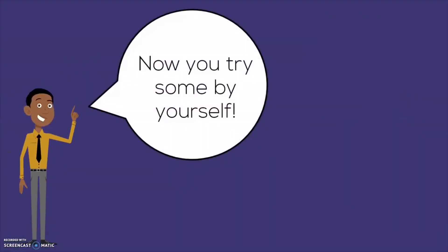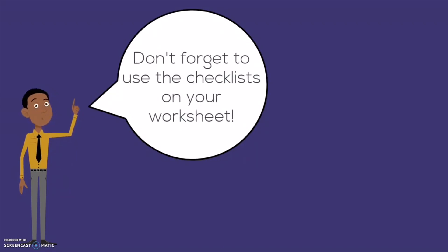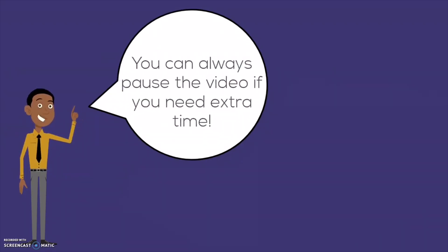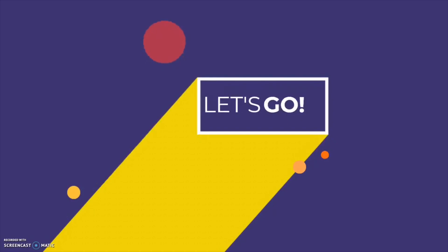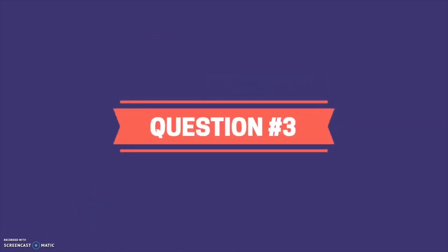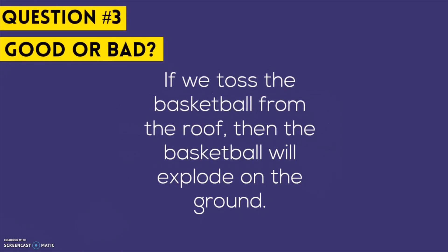Now you try some by yourself. Don't forget to use the checklist on your worksheet. You can always pause the video if you need extra time. Let's go. Question number three: If we toss the basketball from the roof, then the basketball will explode on the ground. Good or bad? Use the checklist.